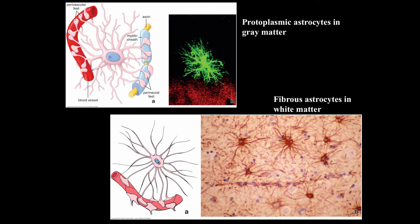Here's a protoplasmic astrocyte in gray matter and a fibrous astrocyte in white matter. This is a specialized fluorescence confocal microscopic preparation to demonstrate the protoplasmic astrocytes. The fibrous astrocytes in white matter are stained with antibodies to gliofibrillary acidic protein — an important protein that forms some neurofibrillary plaques in diseases like Alzheimer's. You don't need to worry about identifying protoplasmic or fibrous astrocytes except by knowing whether you're in gray or white matter.